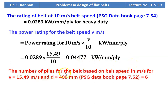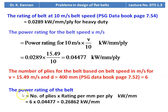Number of plies: for V = 15.49 m/s and diameter = 400 mm, we refer to page number 7.52 and take 6 plies. Power rating of the belt = number of plies × rating per millimeter per ply = 6 × 0.04477 = 0.26862 kilowatt per millimeter.